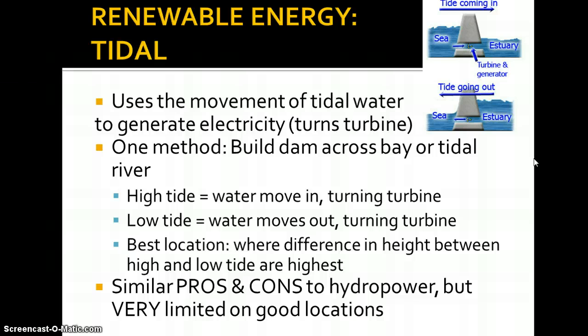You can build a dam across a bay or a tidal river — at high tide water moves in and turns the turbine, at low tide water moves out and turns the turbine. The best location is where the difference in height between high and low tides is greatest, giving you the greatest gravitational potential energy. The pros and cons are very similar to hydropower, but you are even more limited in terms of tidal location. The conditions have to be right, and you do alter the habitats when you do this as well.